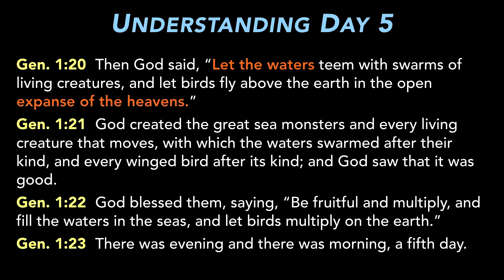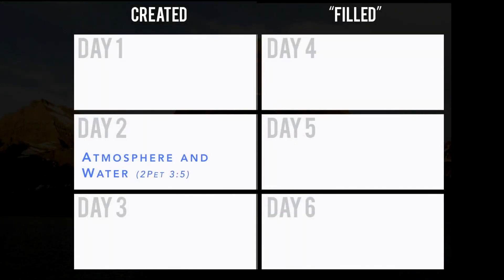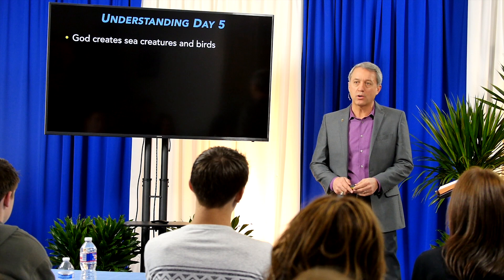The pattern we've been following should be well ingrained by now. We start by observing key words — here, 'waters' and 'expanse of heaven.' Using our chart, we can identify which spaces are being filled by going back to Day 2: the atmosphere above and the seas below the expanse. So in Day 5, God is filling both those spaces — the atmosphere with flying creatures and the seas with swimming creatures. God creates sea creatures and birds on this day.